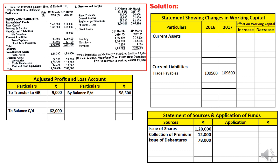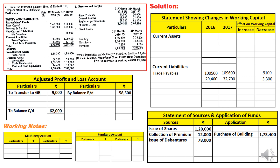Current liabilities are recorded in the statement showing changes in working capital. Trade payables increased from ₹1,50,000 to ₹1,96,000 — this is a decrease in working capital. Short-term provisions increased from ₹29,400 to ₹32,700 — also a decrease in working capital. Under fixed assets, building has no adjustment; the incremental change is treated as purchase of building at ₹1,73,400.